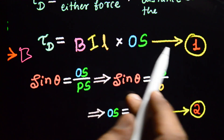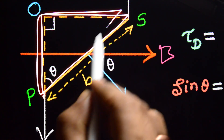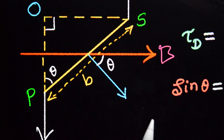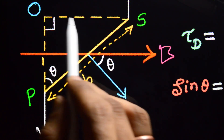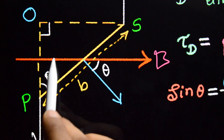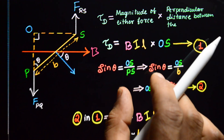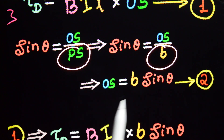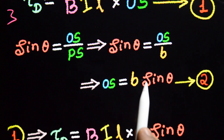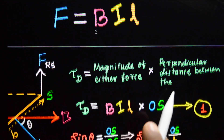To find OS, consider the right-angle triangle POS. The angle at P is theta, where theta is the angle between the normal to the plane of the coil and the magnetic field. From the triangle: sin(theta) = OS / PS, where PS is the breadth of the loop, equal to b. Therefore sin(theta) = OS / b, which gives OS = b × sin(theta). This is our second equation.